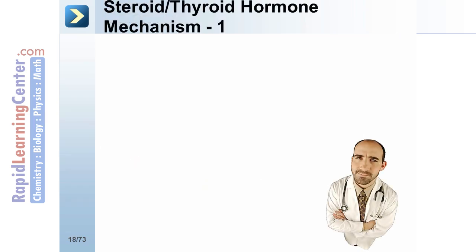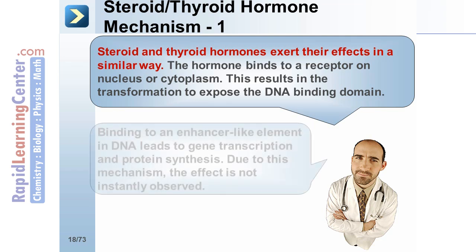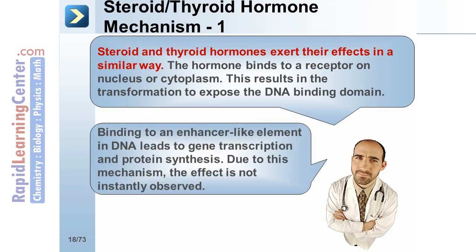Steroid and thyroid hormones exert their effects in a similar way. The hormone binds to a receptor on the nucleus or cytoplasm, resulting in a transformation to expose the DNA-binding domain. Binding to an enhancer-like element in the DNA leads to gene transcription and protein synthesis. Due to this mechanism, the effect is not instantly observed.